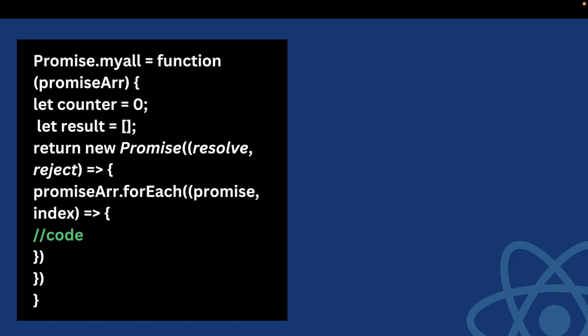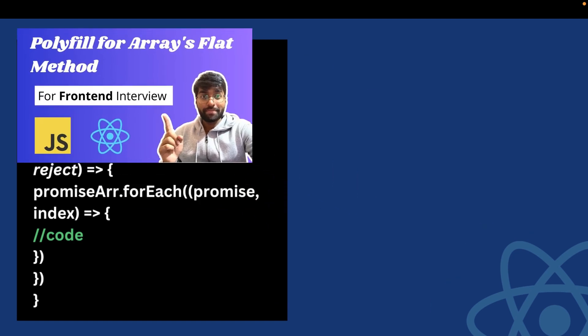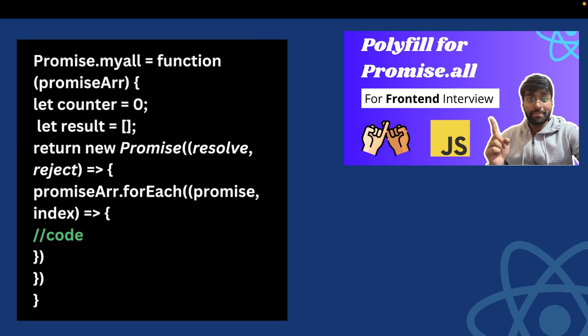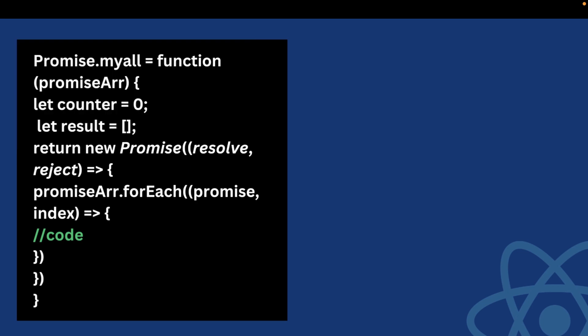Before writing a polyfill for any function, we should know its working. I have already covered Promise.all in a separate video — there is a separate playlist for polyfills asked in front-end interviews; the link is in the description. Promise.all takes a promise array and it is fulfilled only when all the promises are resolved. If any of those promises gets rejected, then Promise.all also gets rejected. The order of results is also maintained in Promise.all.